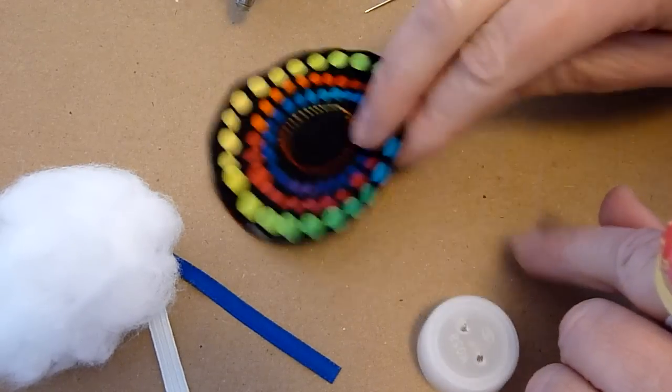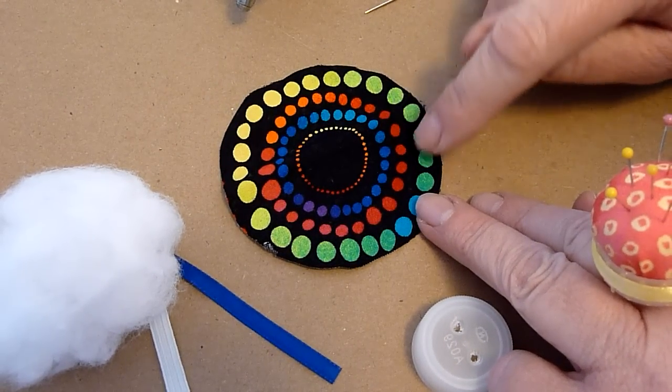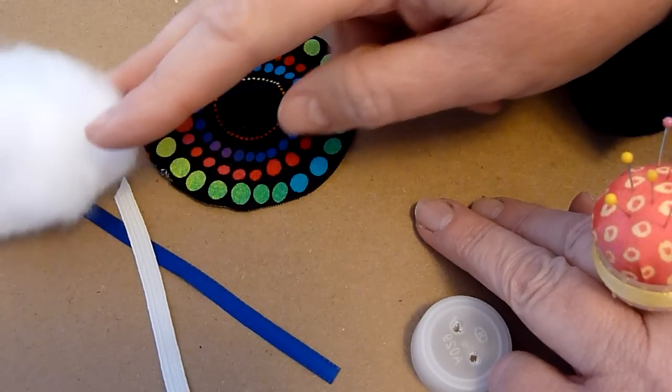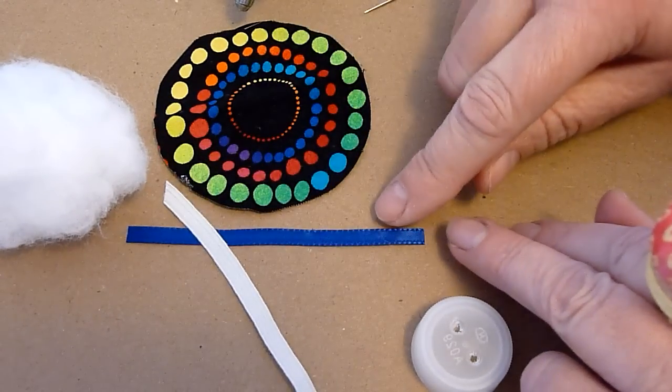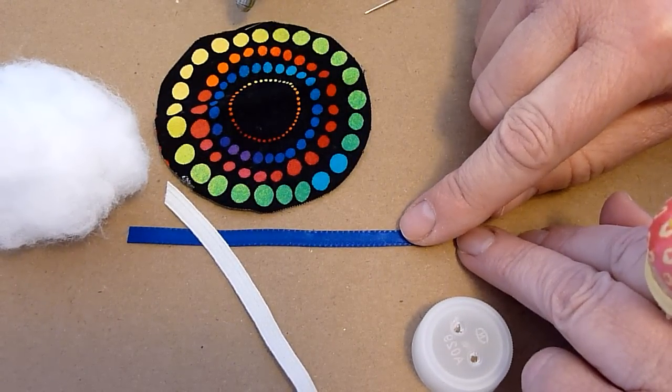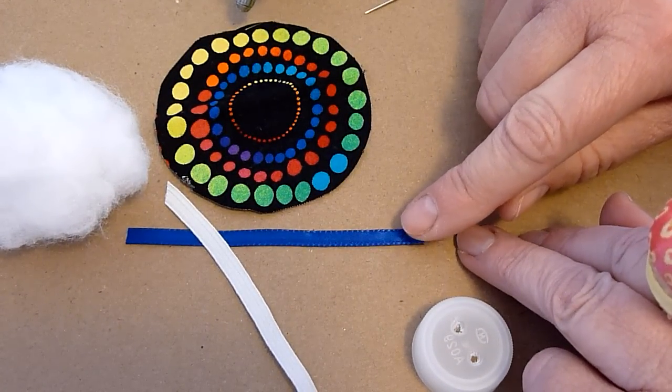You'll need a three inch piece circle of fabric. You'll need some fiber fill stuffing, and you'll need a piece of elastic and a piece of ribbon, both just a little under four inches.